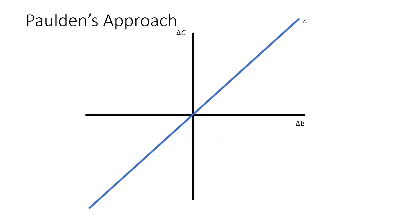Let's talk about Mike Paulden's approach. We recall what your standard CE plane looks like. You have your change in cost as your y-axis, your change in effects as your x-axis, and you have your threshold value lambda cutting through there.